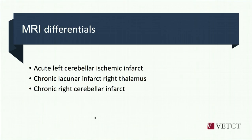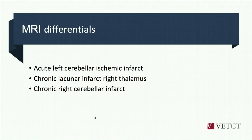Based on the MRI findings combined with the clinical findings of acute onset non-progressive neurological signs, the primary differentials are: an acute left cerebellar ischemic non-hemorrhagic infarct within the territory of the rostral cerebellar artery — which also supplies the caudal colliculus, explaining its involvement in this case — a chronic lacunar infarct within the right thalamus in the region of the perforating arteries, and a chronic right cerebellar infarct also in the territory of the rostral cerebellar arteries.